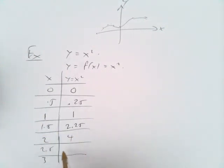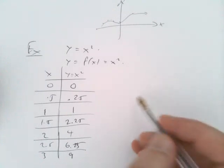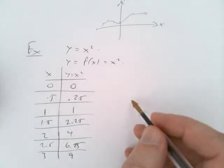2 squared is 4, 2.5 squared is 6.25, and 3 squared is 9. We could have tried other numbers, but this gives us a few to see what it looks like.